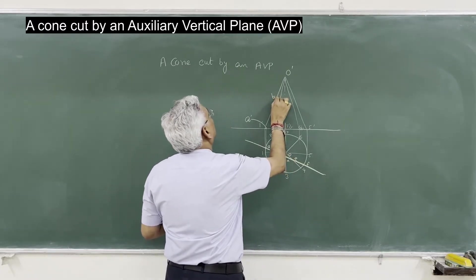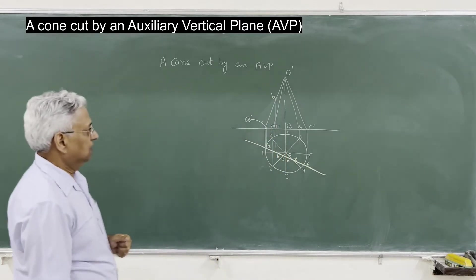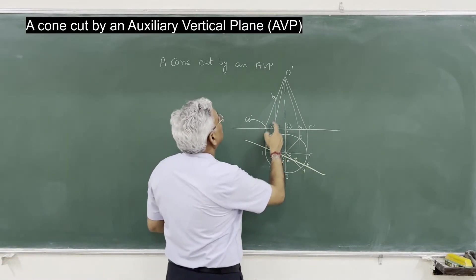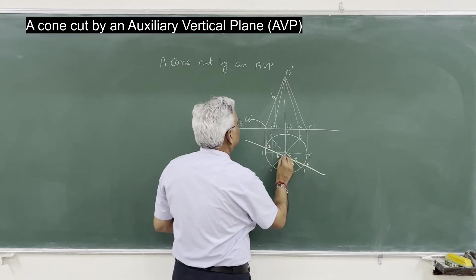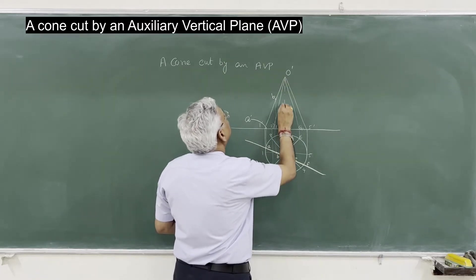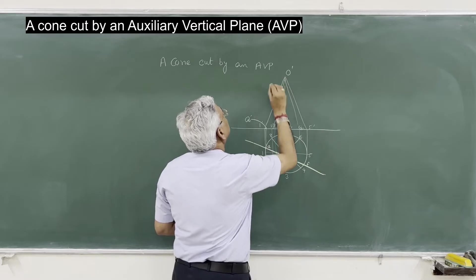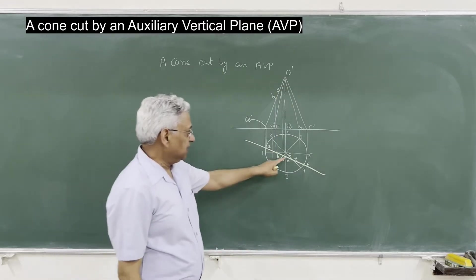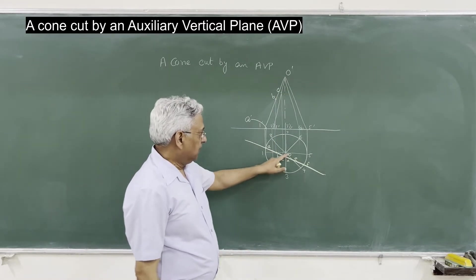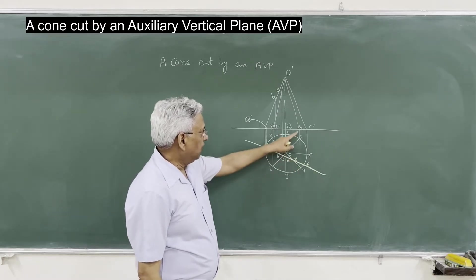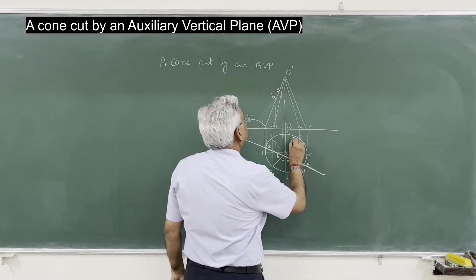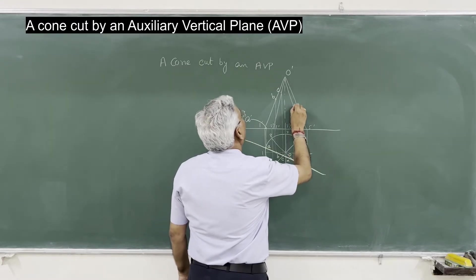B is on O-1. C is on O-2; O-2 is this line, and therefore C will be here. E is on O-4, and O-4 is this line, so you can find E-dash on O-4.